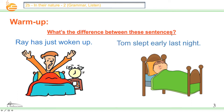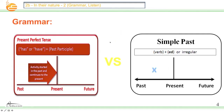What's the difference between these sentences? 'Ray has just woken up' and 'Tom slept early last night.' What do you think? What's the difference between these sentences? I will explain more. Okay, grammar time now.